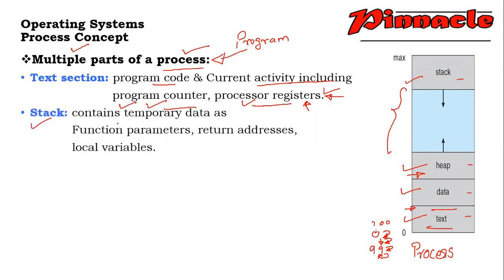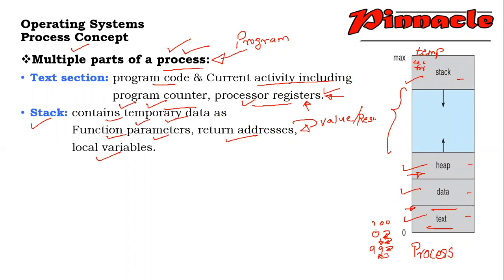Next is the stack section. It contains temporary data such as function parameters, return addresses, and local variables. When we execute the program it becomes a process, and when execution starts it will generate some temporary data. For example, if we are going for some sorting or searching technique, we generate some temporary variables. Function parameters include actual and formal parameters given to the subordinate function. The return address stores where to return the result, and local variables used while executing the program are all in your stack.